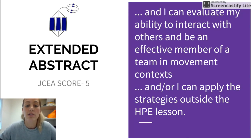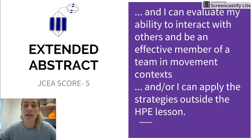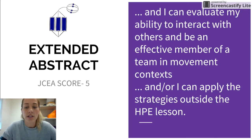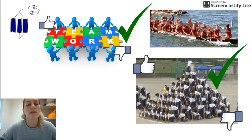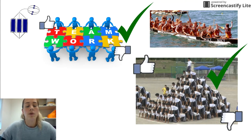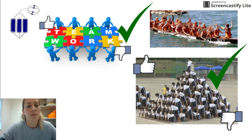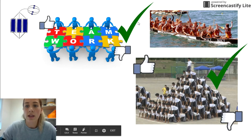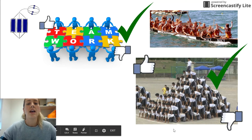At an extended abstract level — this is JCEA score of five — I will be able to do the previous multi-structural and relational components, and I can evaluate my ability to interact with others and be an effective member of a team in movement contexts, and I can apply the strategies outside of a health and PE lesson. This means I demonstrate all the qualities of relating to others well, I can evaluate and explain why I'm good at certain aspects, and I can describe how this has impacted me outside of schooling — in a team sport, in a group effort, in a workplace, or in another class.